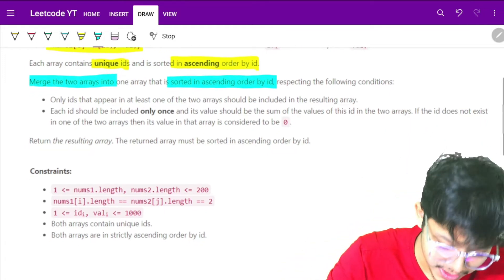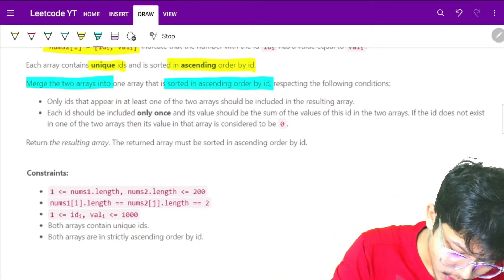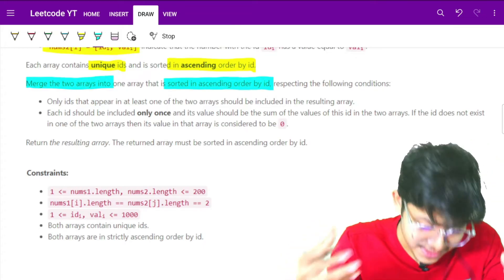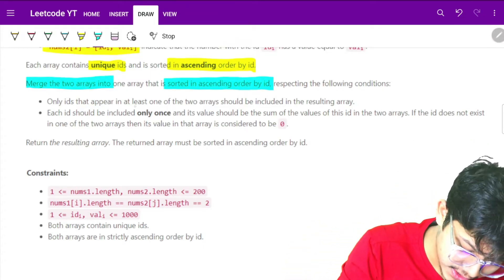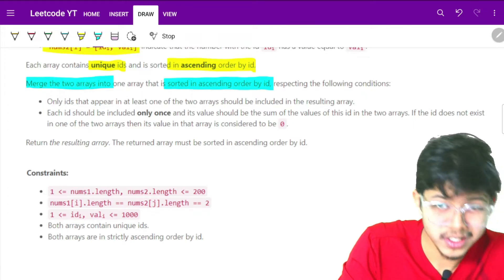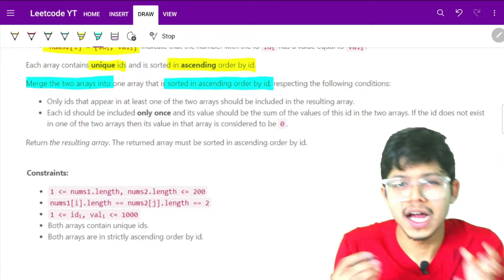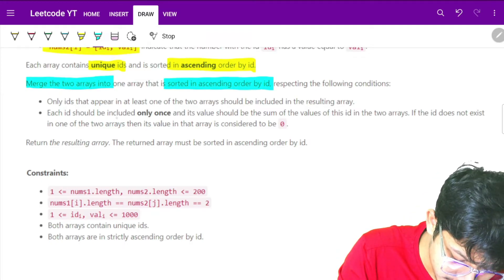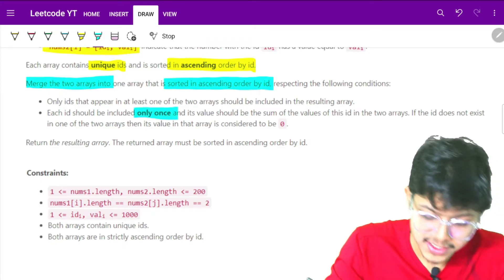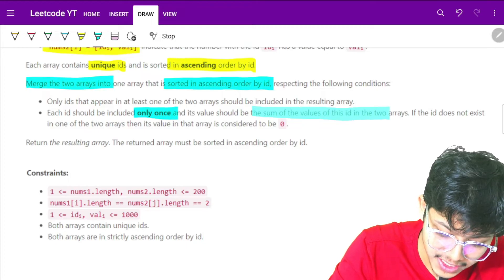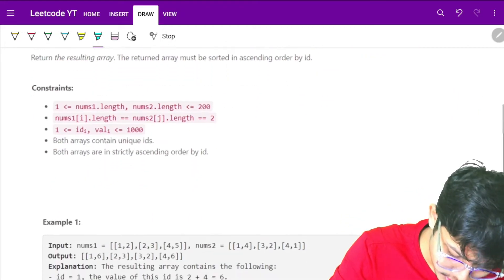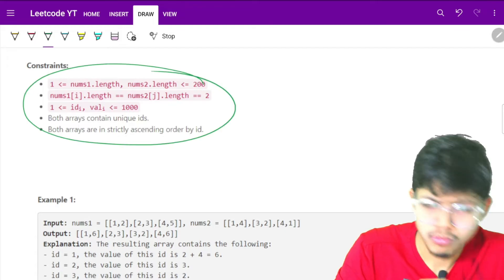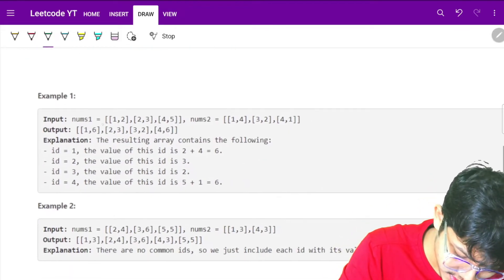Only IDs that appear in at least one of the two arrays should be included in the resulting array, which means the IDs cannot be repetitive. Each ID should be included only once and its value should be the sum of the values of its ID in the two arrays.